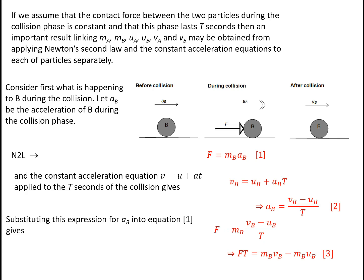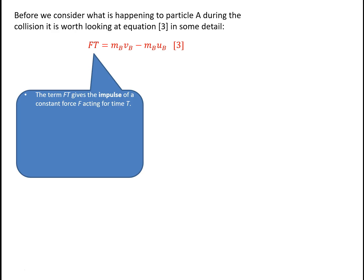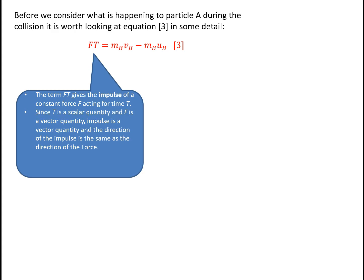The quantity Ft is called the impulse of our constant force F which acted for the time T. Since T is a scalar quantity and F is a vector quantity, impulse is a vector quantity and the direction of the impulse is exactly the same as the direction of the force. The units of impulse are the newton second, because impulse is force times time.